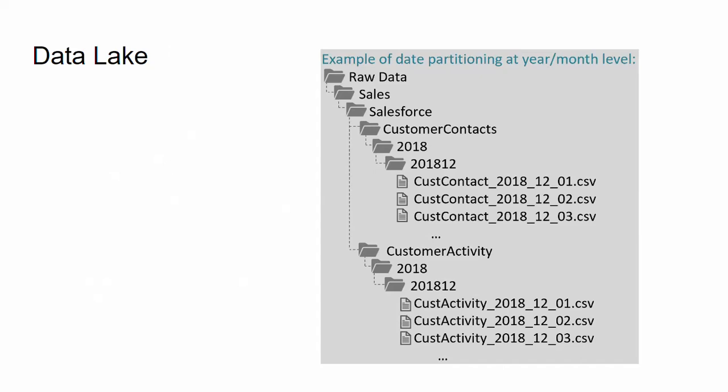All CSVs under the same subject area should have the same schema — the same definition of columns and values. So the customer contact CSV files for December 1, 2, and 3 should have the same schema, and the customer activity files for December 1, 2, and 3 should have their own schema. This makes it easy to run a SQL query against all customer contacts or all customer activities as if they were relational tables.